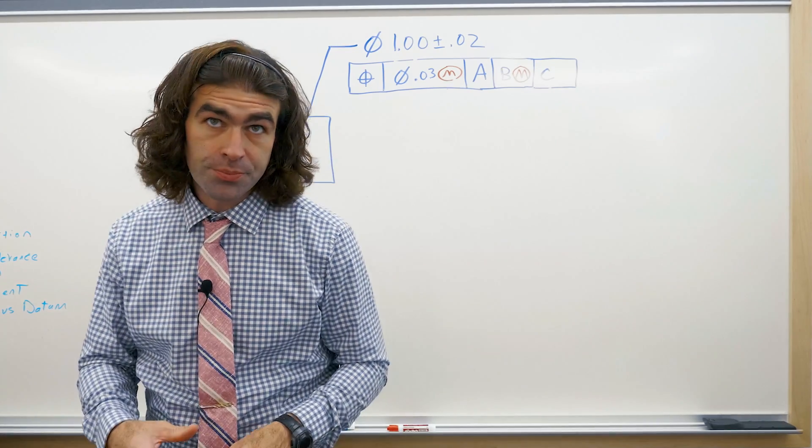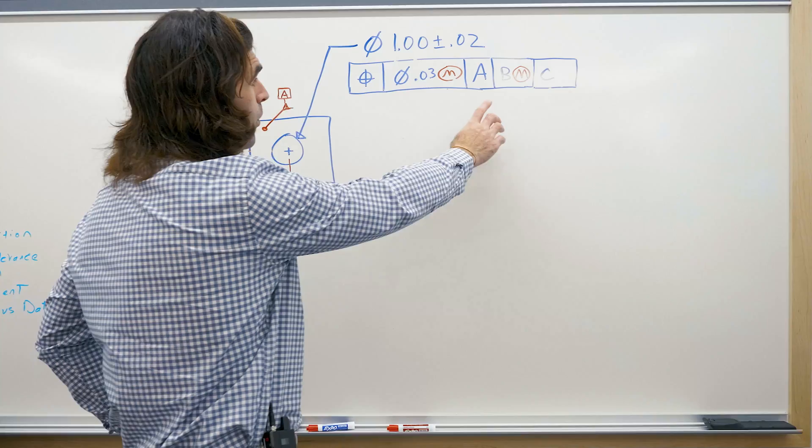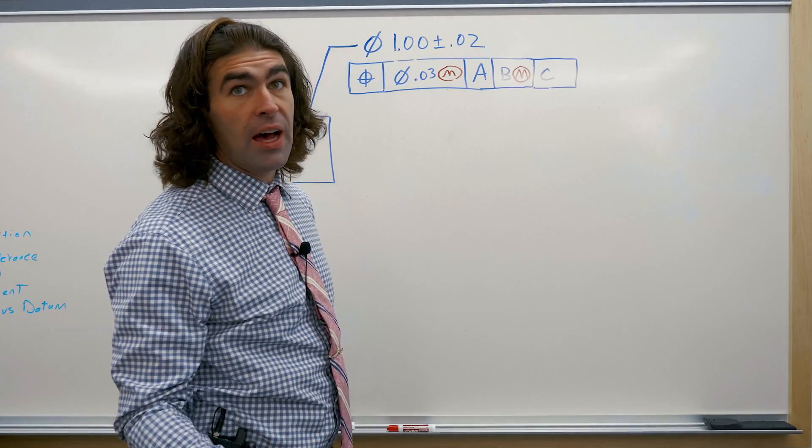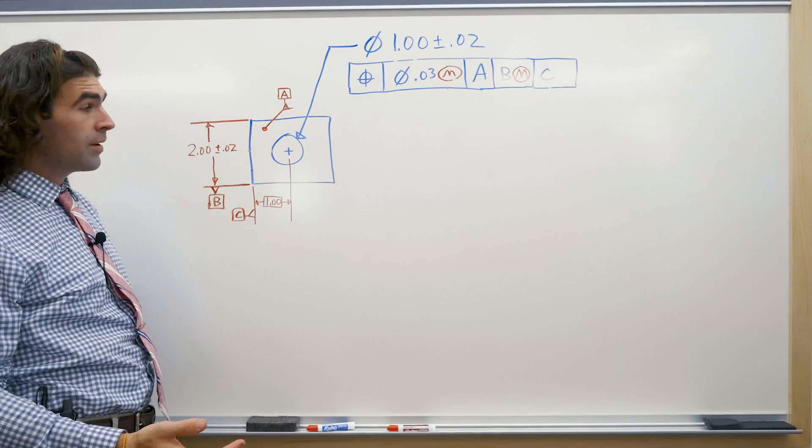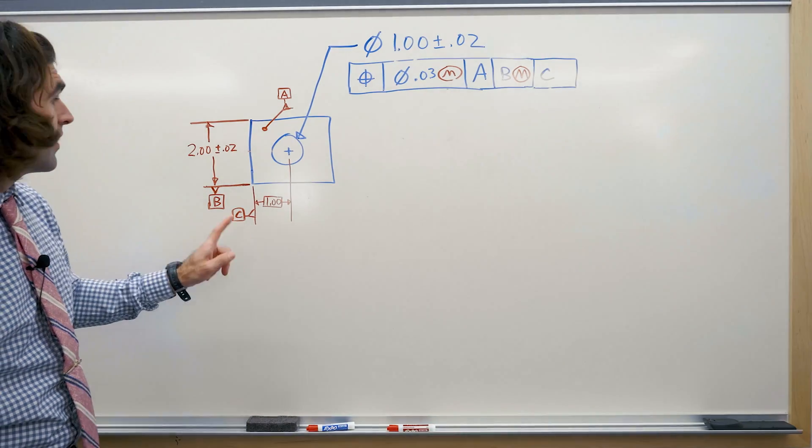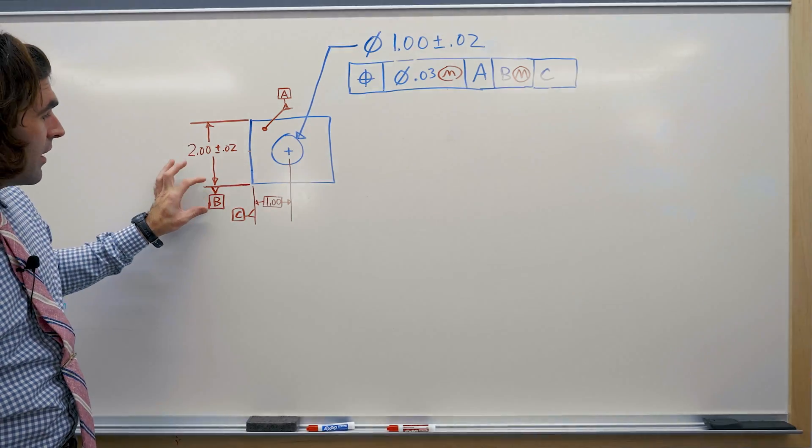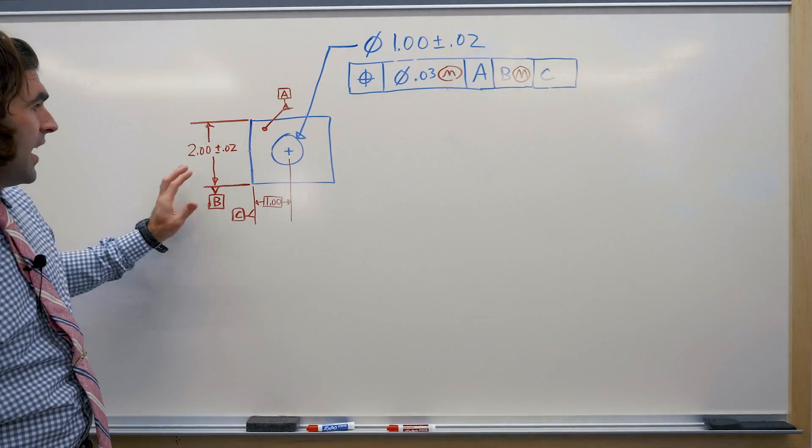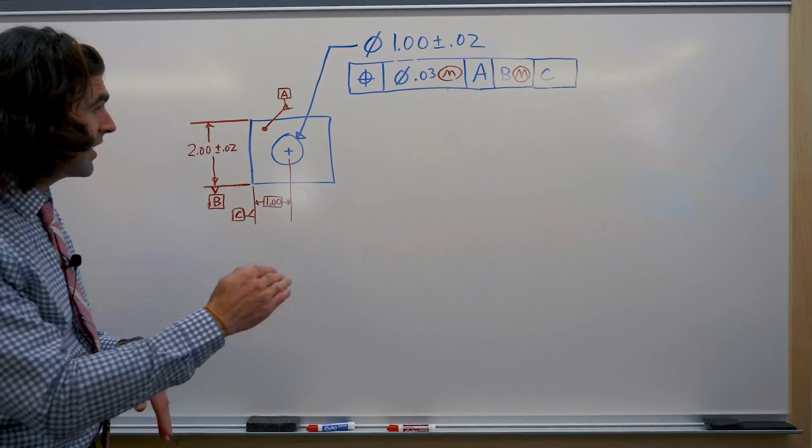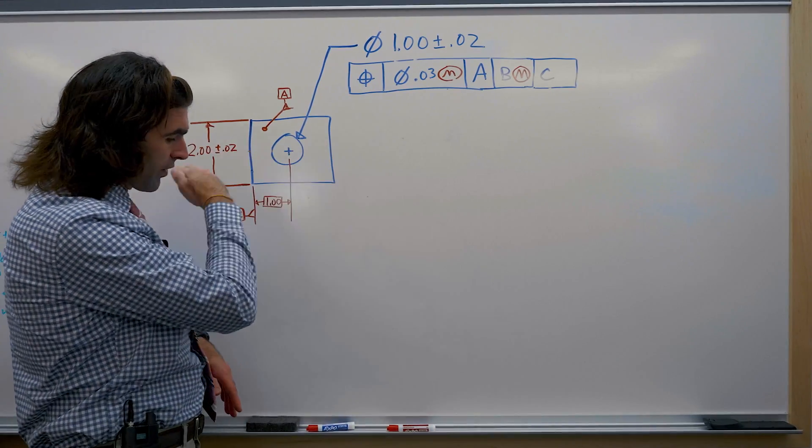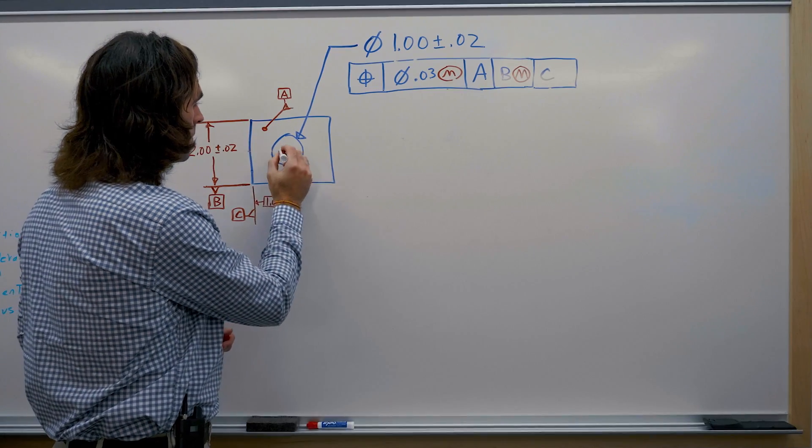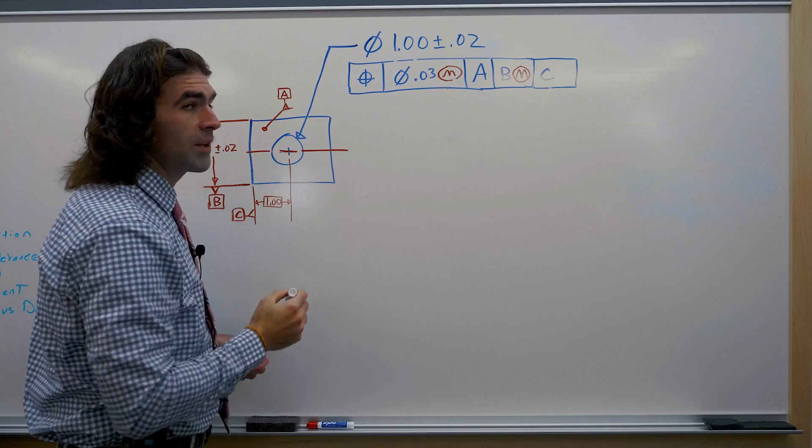So let me explain what I mean. If the datum is a feature of size, so in this case datum C is not a feature of size, datum B is a feature of size. The datum symbol is attached or in line with a dimension that's indicating that the datum is a center plane going through the part. I'll indicate that with a center line.